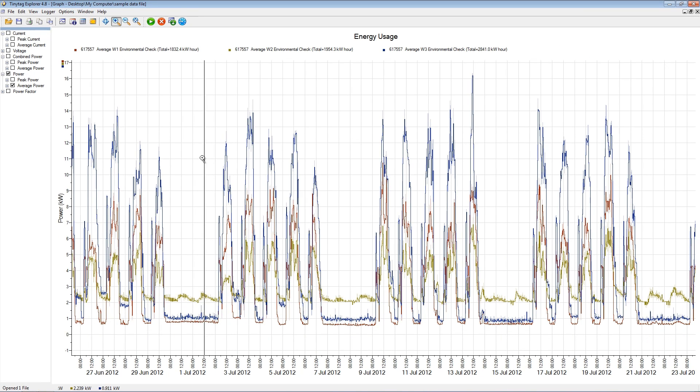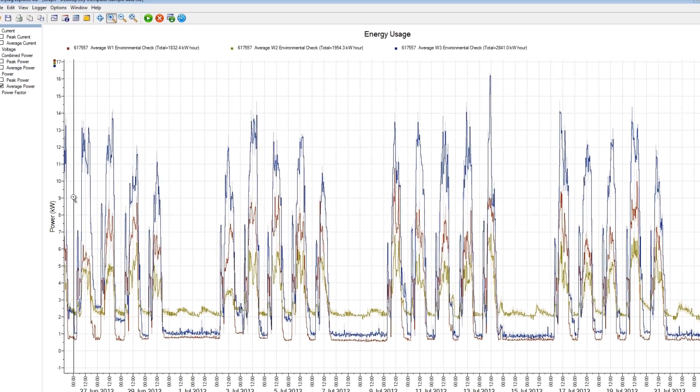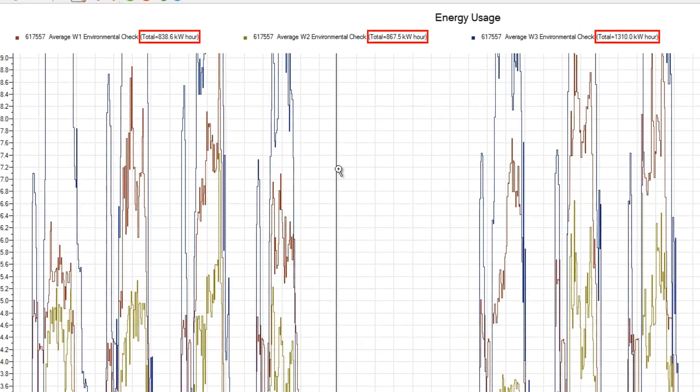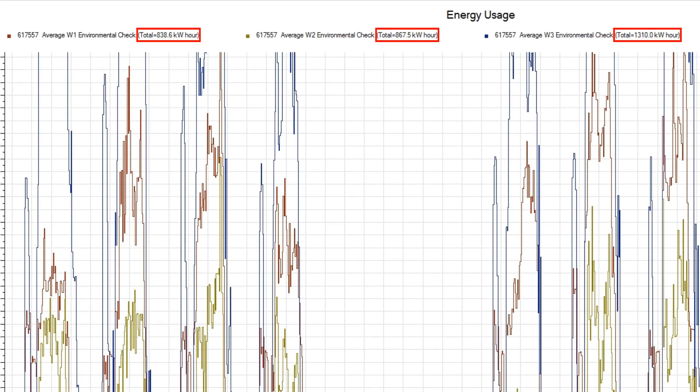A zoom option allows more detailed viewing of selected data. As the zoom range is changed to look at data in more detail, the kWh figure updates automatically to reflect the view being shown.